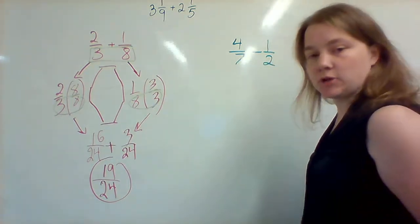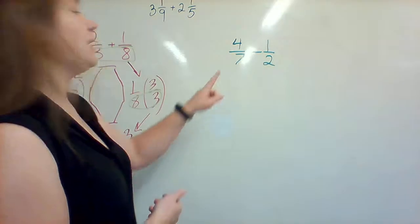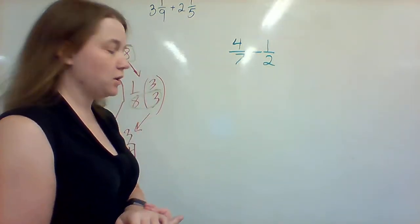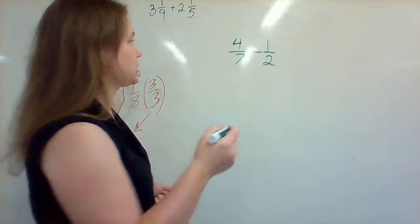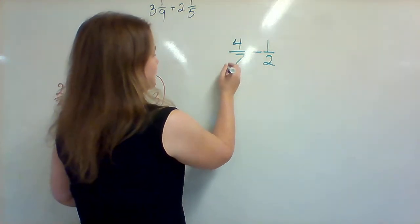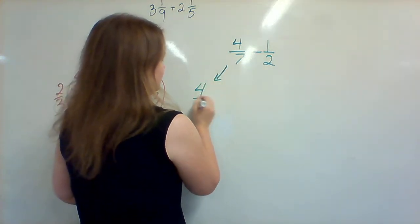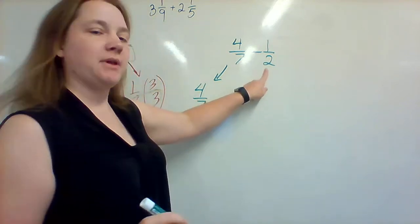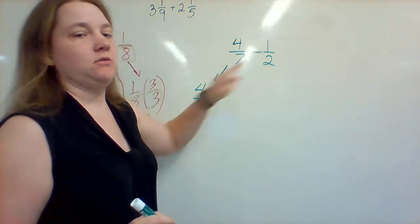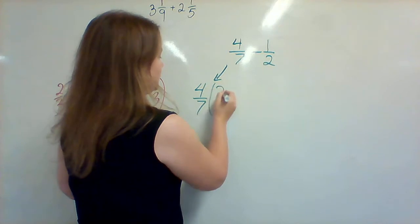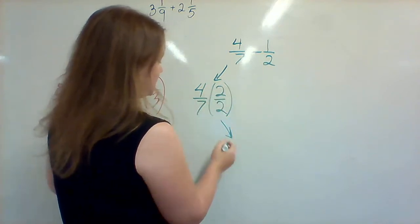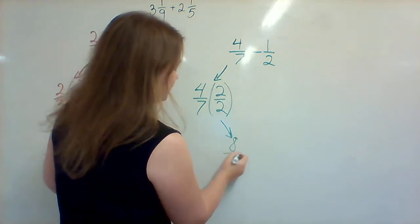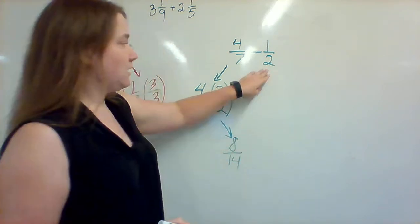Let's take a look at a subtraction problem. We have 4 over 7 minus 1 over 2. I'm going to do the same thing here. Nothing's really going to change. So I'm going to take out the 4 sevenths and multiply it by the other denominator, which is 2. So I'm going to multiply it by 2 over 2. Put it back in. 2 times 4 is 8, 2 times 7 is 14.